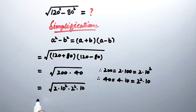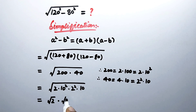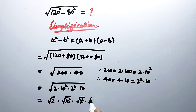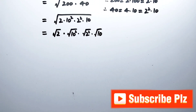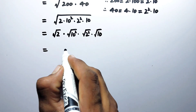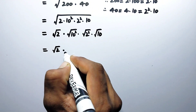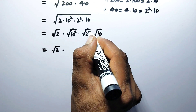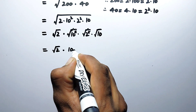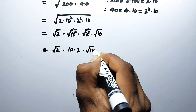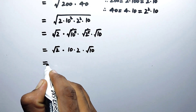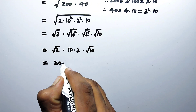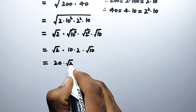So now here we can write this as: the square root of 2 times 10 squared times 2 squared times square root of 10. This square root will be cancelled by this square, and this square root will be cancelled by this square. So here we get 10 times 2 times square root of 10, which gives us 20 times square root of 10.